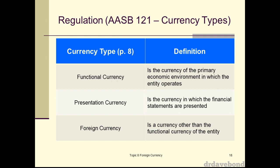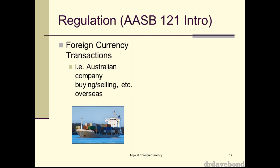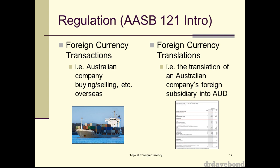Presentation currency is the currency in which financial statements are presented. For most of what we're looking at in this subject, we'll assume the functional currency and the presentation currency are the same — it just makes life easier. Foreign currency is something other than the functional currency of the entity. So if you're an Australian company trading with New Zealand, Japan, the US, or Switzerland, those currencies are your foreign currencies. There are two types: foreign currency transactions and foreign currency translations.